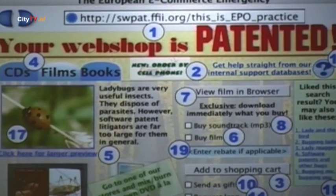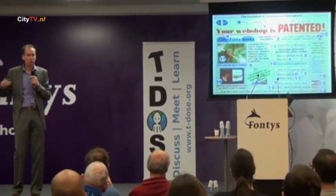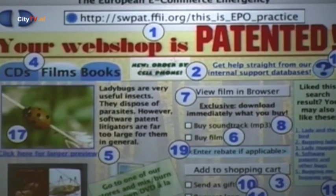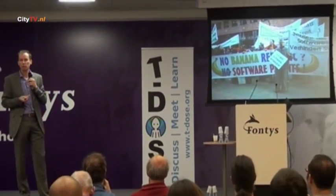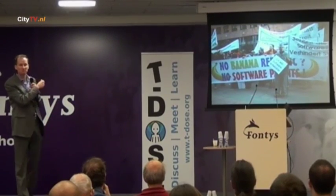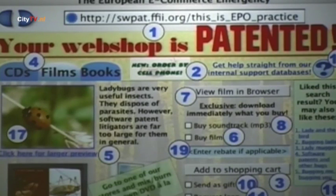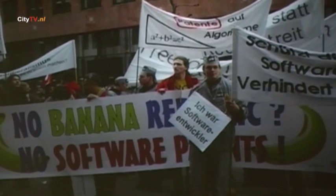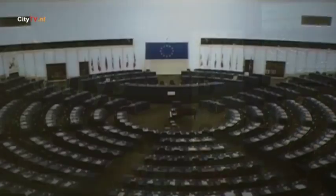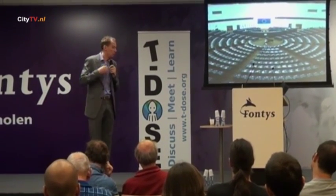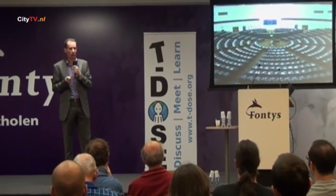This created a big backlash from lots of people, particularly in the open source industry, who pointed out existing European patents and how silly things had become. They found patents for paying by credit card - because that is transmitting sensitive data securely through a channel - and for rebate codes in transactions. There was lots of protest, even in Brussels and Germany, because it was felt that if you could get patents on these kinds of things the European software industry would come to a complete standstill.